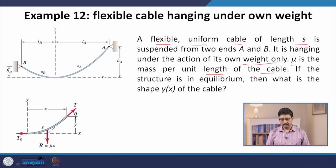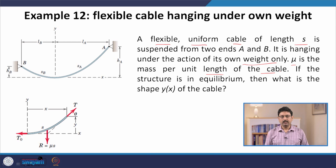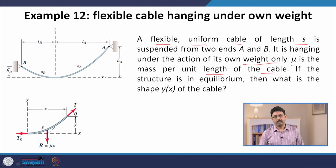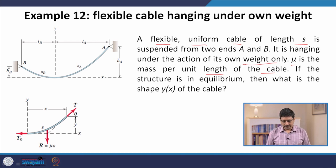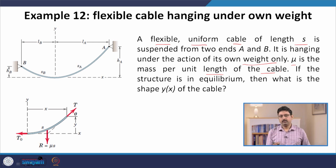Now the structure is in equilibrium — what is the shape of this cable? In the previous case, for a massless rope hanging because of a constant external load per unit length, the shape was a parabola. Let us see what we find in this case. Recall from our force balance analysis.